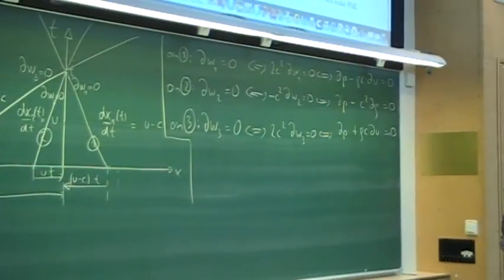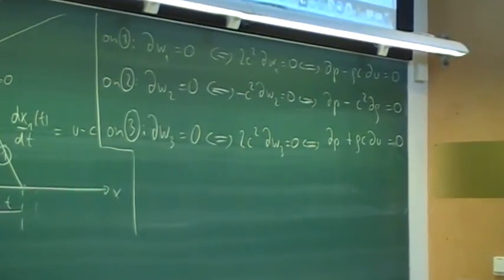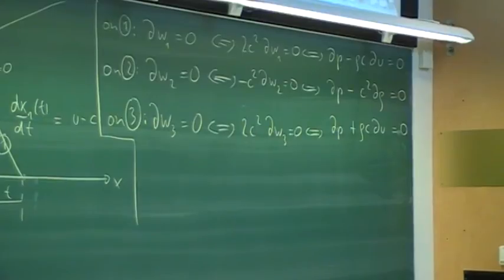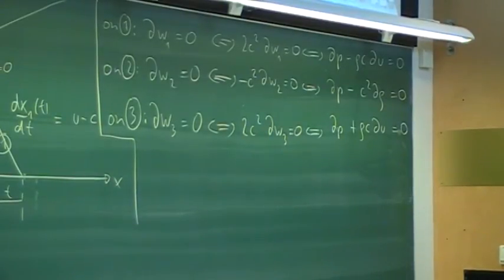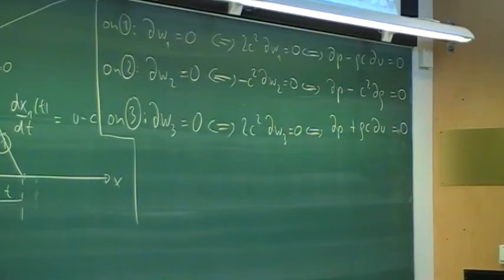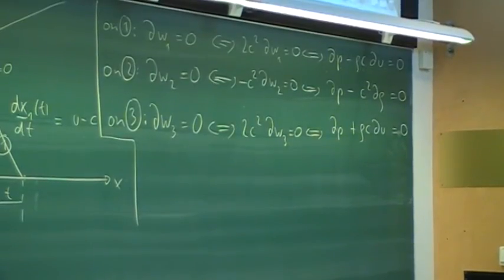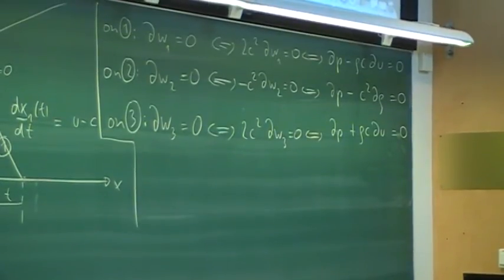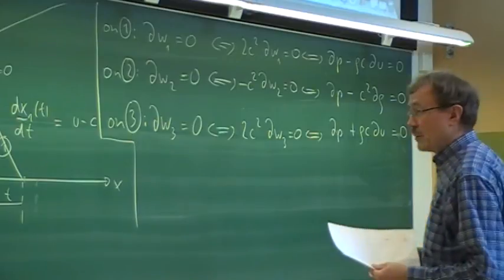That concludes this part. We now have a better understanding of the Euler equations — viewed on the characteristics, they become similar to scalar equations, especially when we take lambda locally as constant (u minus c, u, and u plus c). Source terms are discussed in the lecture notes.